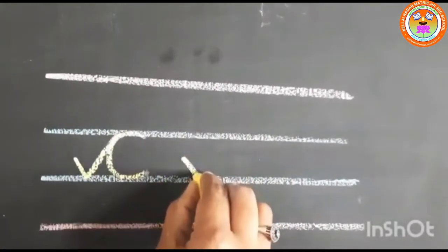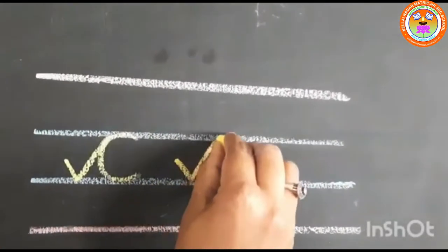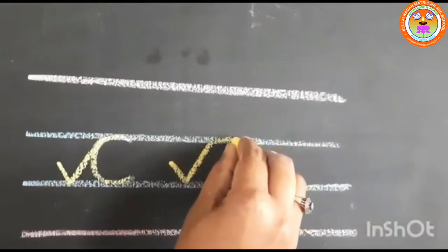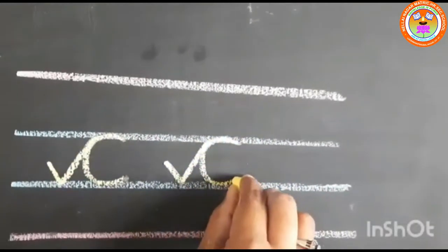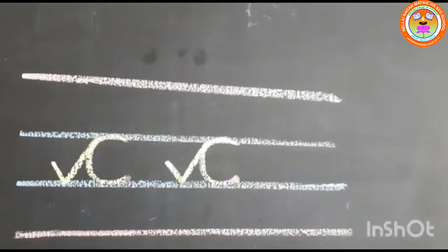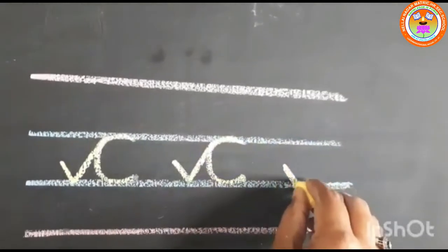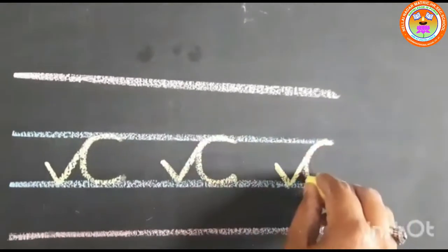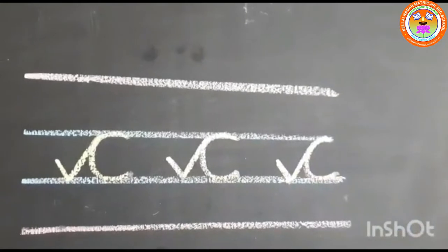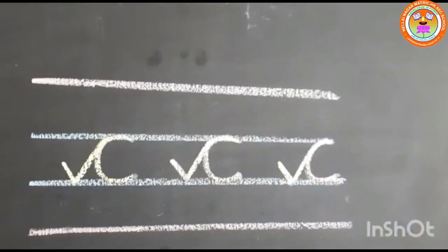Once again: small tick, curve, come back and touch the blue line and stop here. One more time, put small tick, curve, come back and touch the second blue line. This is how we should write cursive small letter C.